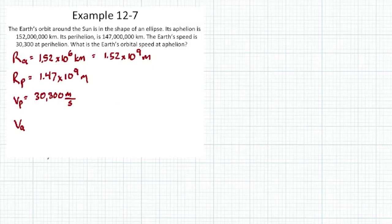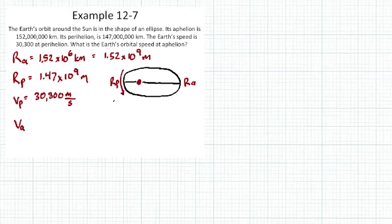So the question is, what is the speed at aphelion, V_A? Now if we want to draw this, we can. This is greatly exaggerated. Remember, Earth's orbit is actually very close to a circle, although it's not a perfect circle. I'll make this the sun right here, and we'll call this R_P and this R_A, perihelion and aphelion. Here, the velocity at perihelion is 30,300 meters per second. The question is, what is the velocity at aphelion?